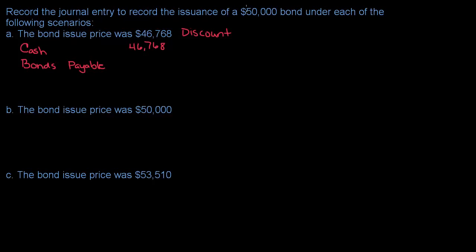But how much is the company going to have to pay back? Remember, it's a $50,000 bond, which means the company has to pay back $50,000. Now there's a difference here and the difference would be a debit of $3,232. That difference is discount on bonds payable.